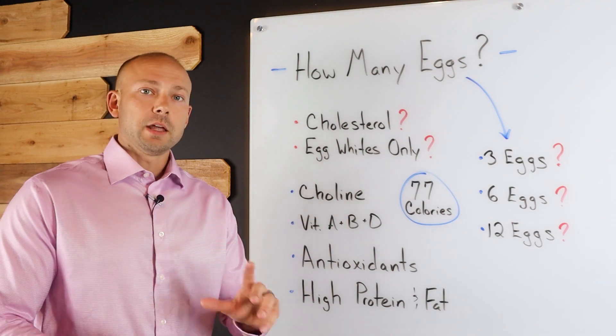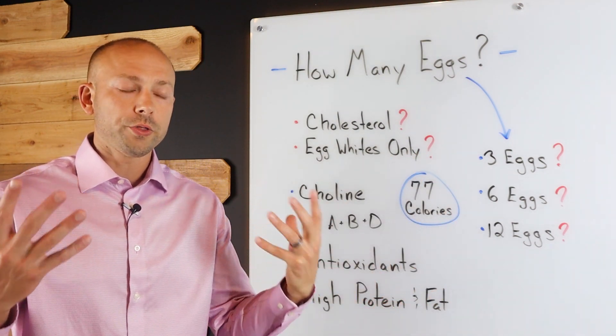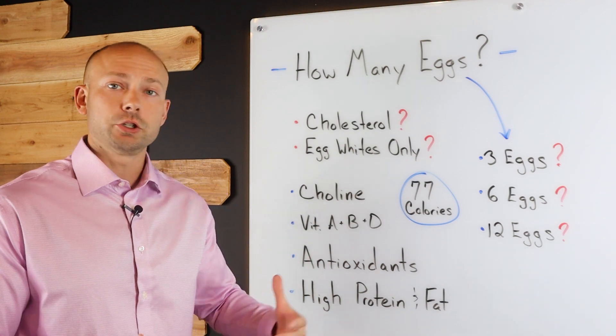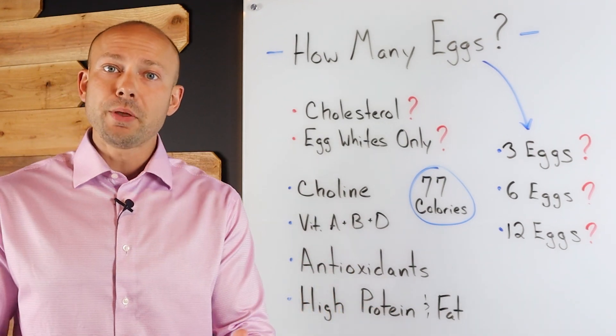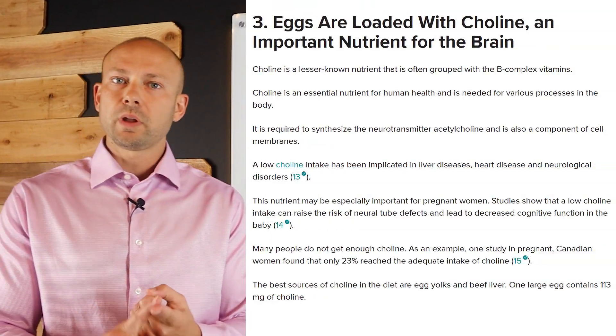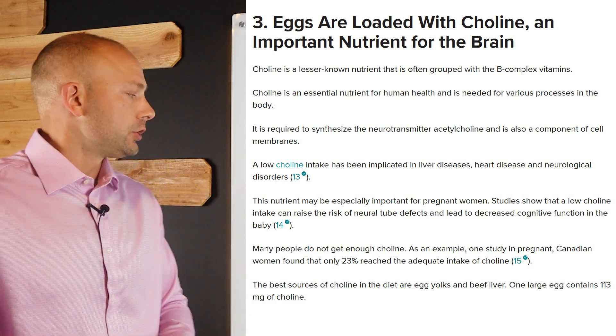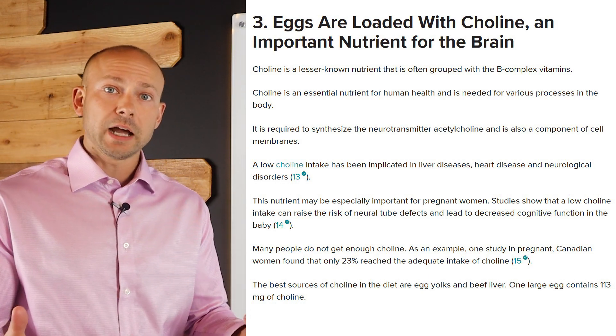So the first nutrient that you're going to find in an egg, when you're trying to determine how many you should eat, these are all things that need to run through your mind because it's like, do you want these nutrients? Do you want the benefit that the egg has to offer? So first is choline. Choline is extremely good for your brain health and your liver health. We want to make sure that we're getting lots of choline in our diet. Eggs are a good source of it.